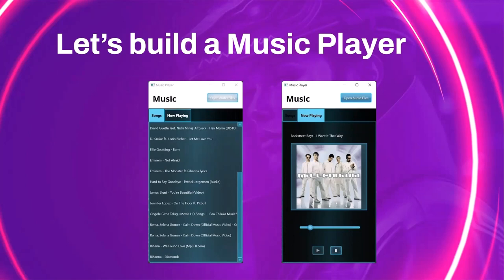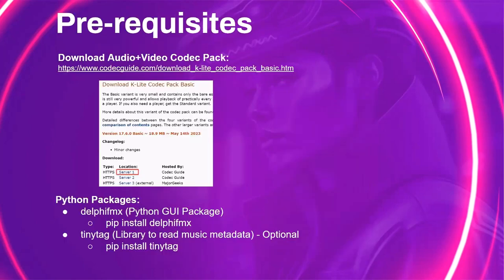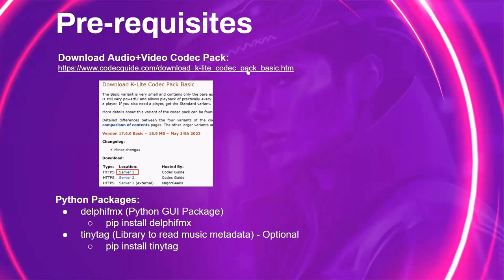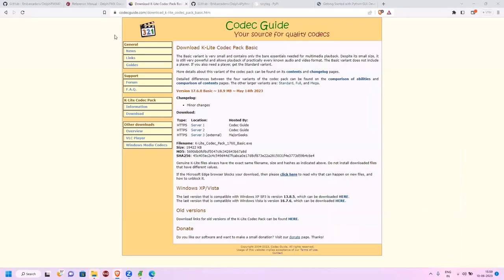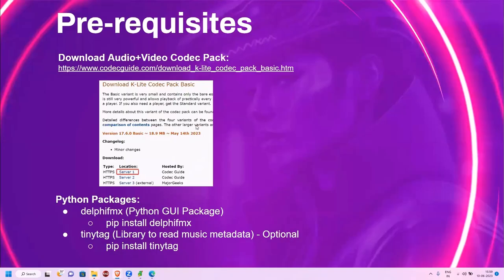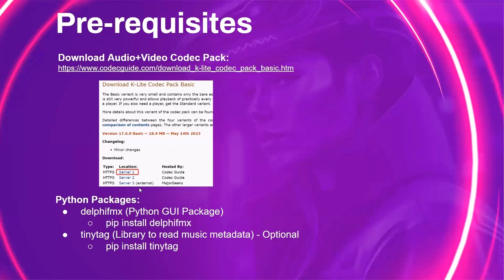There are some minimal prerequisites for our music player application. In order to play an audio file, the media player component of the Delphi FMX Python package needs an installed media codec pack. We are providing a link you can use to download that — it's a K-Lite codec pack which contains all the necessary codecs for multimedia playback. We also need two Python packages: the Delphi FMX package and the TinyTag package.